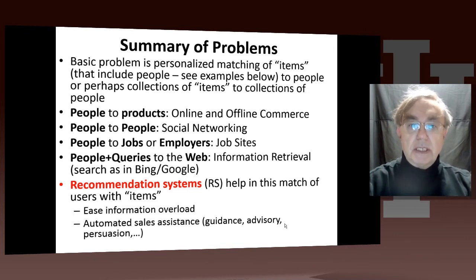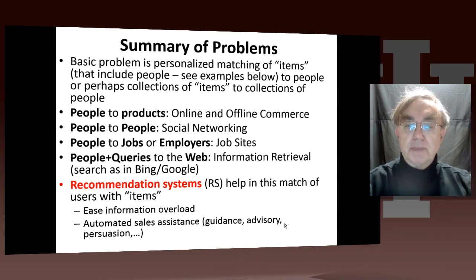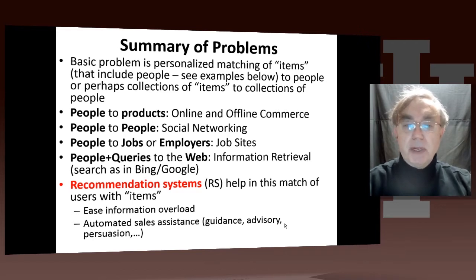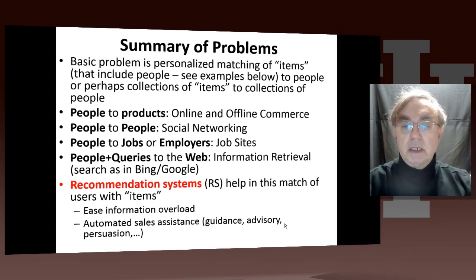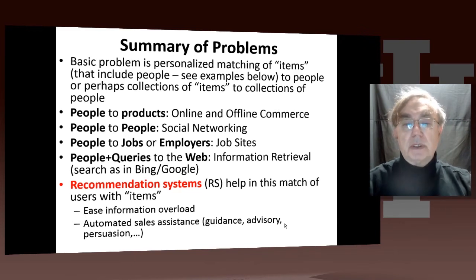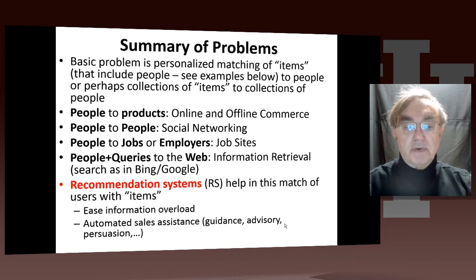It's the personalized matching of items that include people. That's LinkedIn, which is matching people to people. Matching items to people, or perhaps collections of items to collections of people. People to products is online and offline commerce. People to people is social networks like Facebook, LinkedIn, etc. People to jobs or employers at job sites like CareerBuilder or Monster. People plus their queries to the web — that's information retrieval, which we will discuss later on as a different use case.